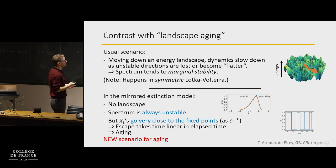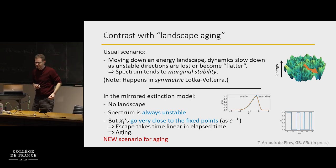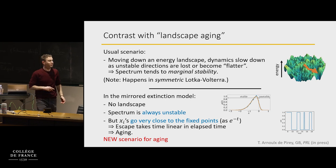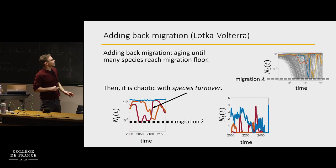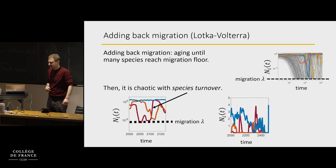This aging is, I hope I've convinced you, a different scenario from what happens in glasses. And that is the mirrored extinction model. Going back and adding migration: what does migration do? It's an additional plus lambda at the end. It's like a hard floor — it prevents the variables N from going any lower than some value lambda.